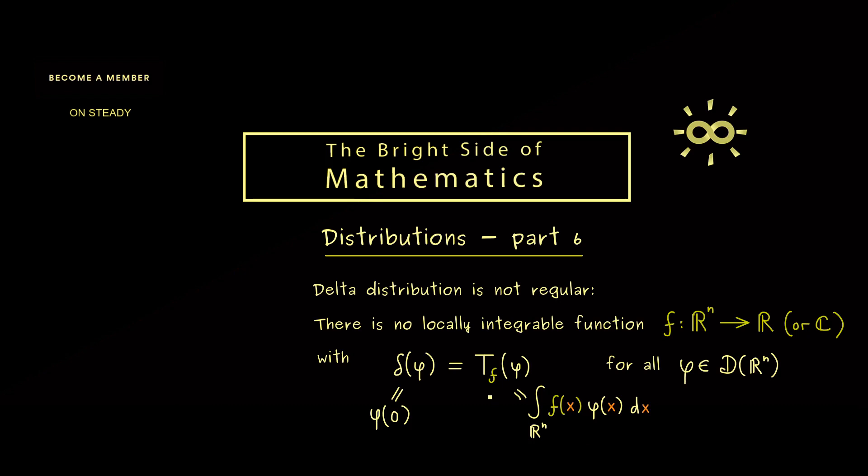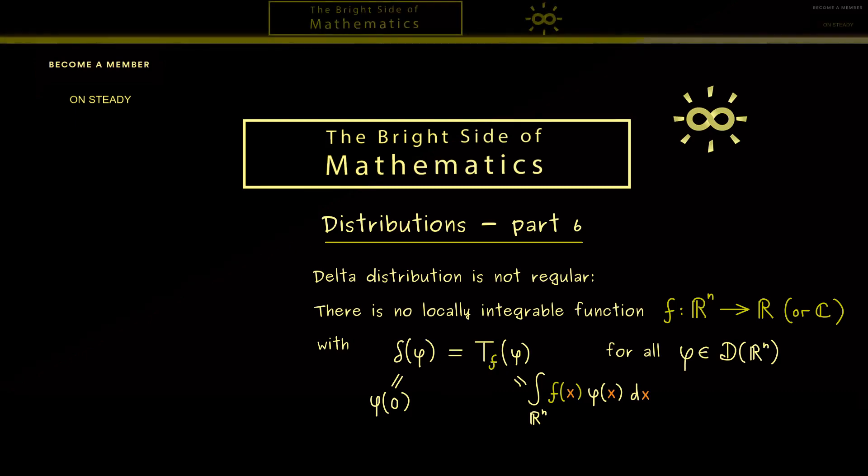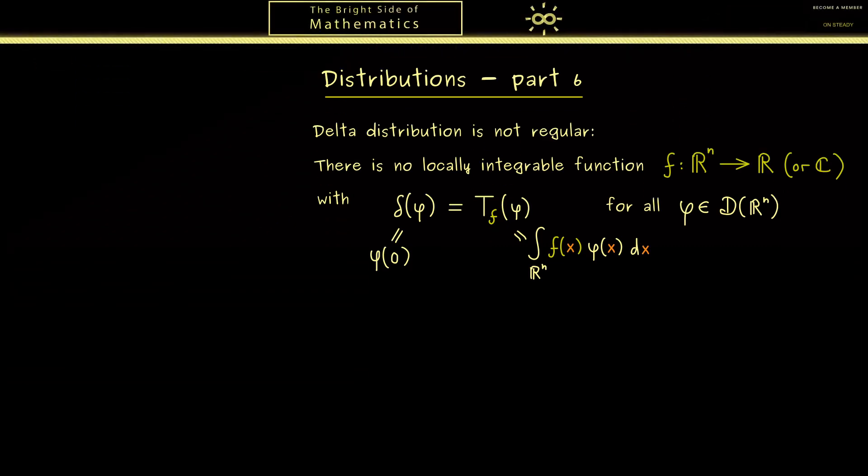Now our claim here is for no f this equality is possible. Indeed this is a standard exercise and here I want to show you the proof of it. Let's do it with a proof by contradiction. Therefore let's assume that we find such a function f. So it's a locally integrable function where we usually use this symbol here. And now this property here will lead to a contradiction.